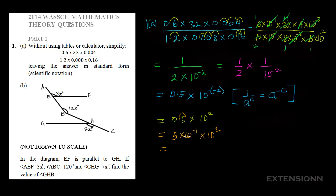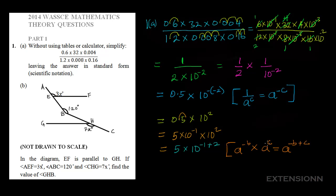We now bring 10 to the power minus 1 and 10 to the power 2 together. Using the law of indices — when you multiply same bases you add the powers — we get A raised to power minus B times A raised to power C equals A raised to power minus B plus C. So we have 5 times 10 to the power minus 1 plus 2, which is 5 times 10 to the power 1. This is our final answer for the first question.